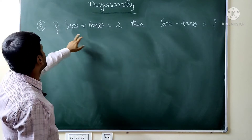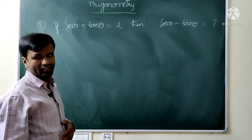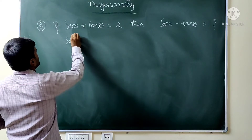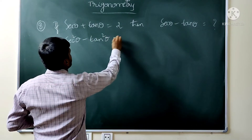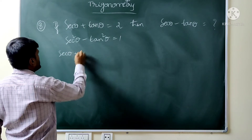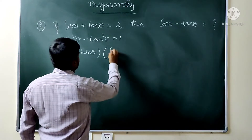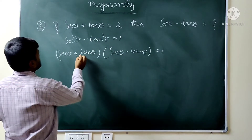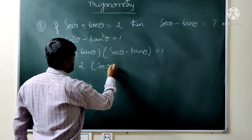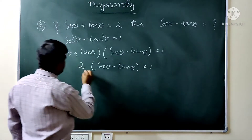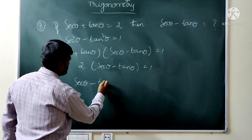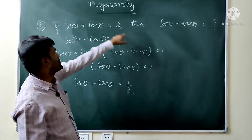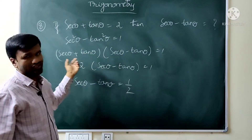Eighth question: if sec θ plus tan θ equals 2, then sec θ minus tan θ equals what? Using the identity sec² θ minus tan² θ = 1, which factors as (sec θ + tan θ)(sec θ − tan θ) = 1. So 2 times (sec θ − tan θ) = 1, giving sec θ minus tan θ = 1 by 2.